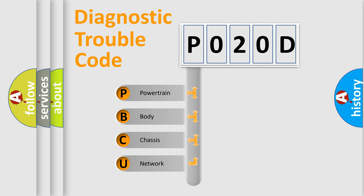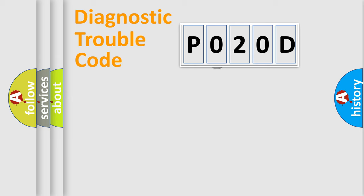We divide the electric system of the automobile into four basic units: Powertrain, Body, Chassis, and Network. This distribution is defined in the first character code.